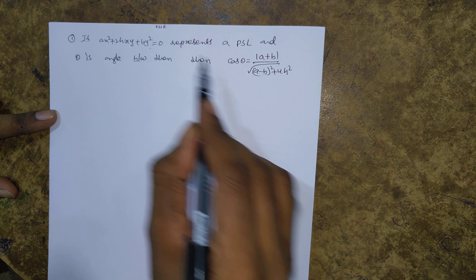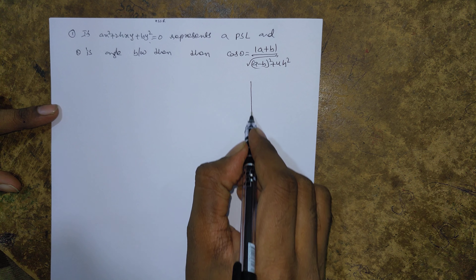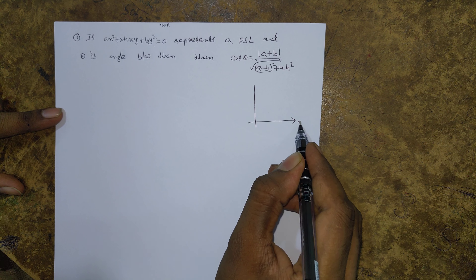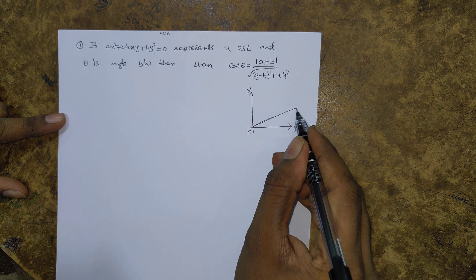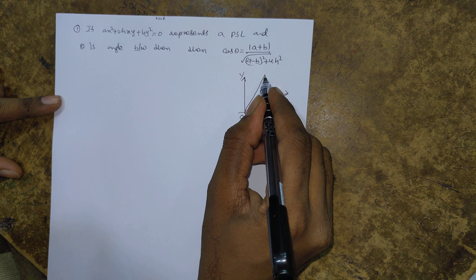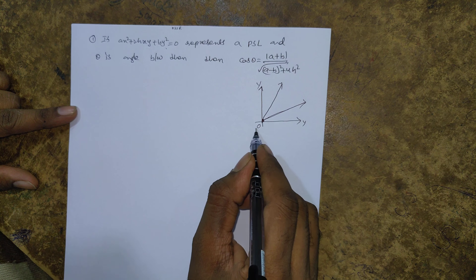To find the angle using this formula, consider a diagram with the y-axis, x-axis, and origin. The pair of lines is homogeneous, passing through the origin (0, 0). This is one line, and this is one more line — the point of intersection is at the origin (0, 0).